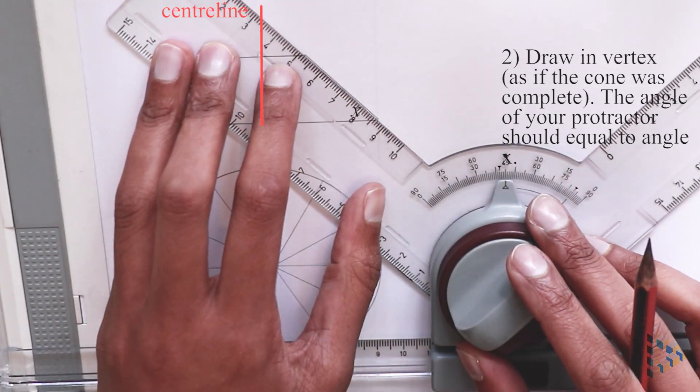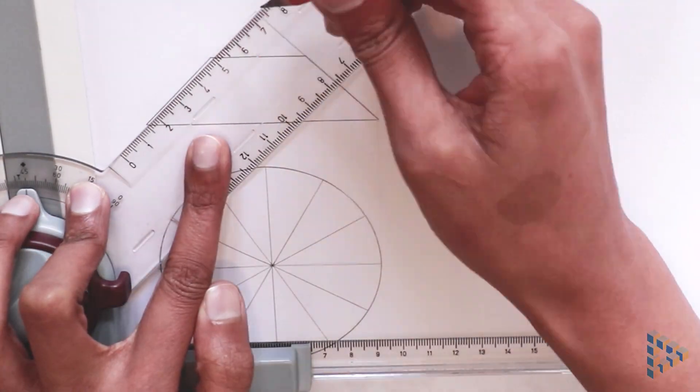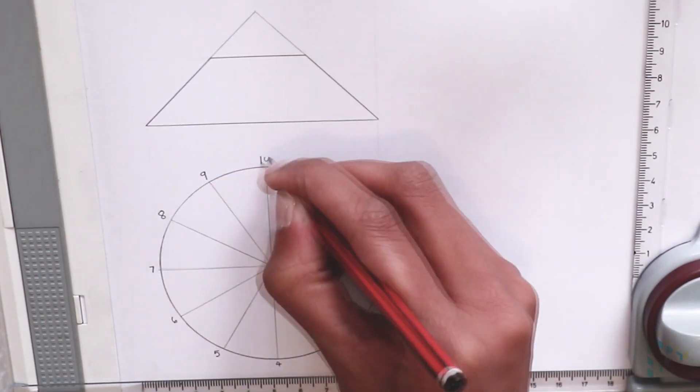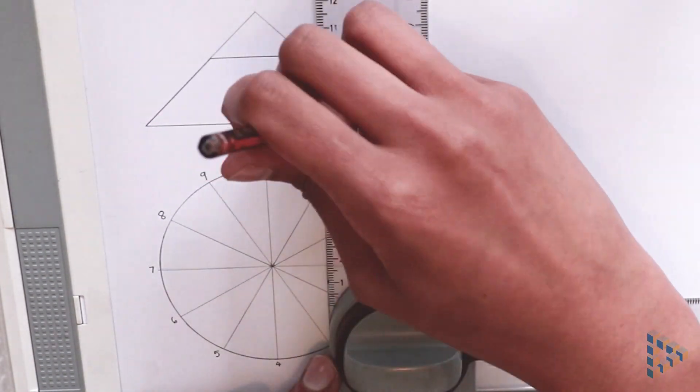Next, I fill in the vertex by extending both edges to the cone centerline. I then label all discretized segments from 1 to 12 and project these up to the base of the front view.